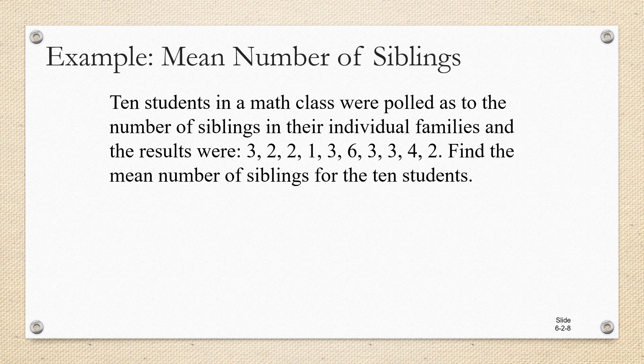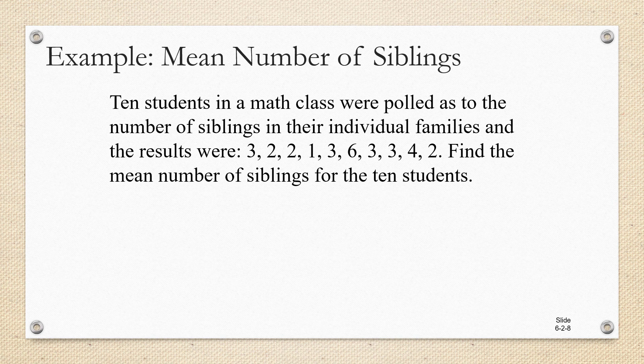So let's try the procedure. 10 students in a math class were polled as to the number of siblings in their individual families and the results were 3, 2, 2, 1, 3, 6, 3, 3, 4, 2. Find the mean number of siblings for the 10 students.